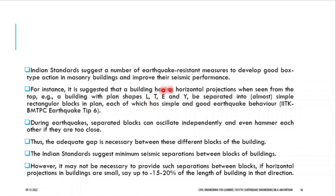For a T shape, you can separate the web and the flanks. Separate the T element — do not merge them, give some spacing. An adequate gap is necessary between the different blocks of a building, as given in the national building code.